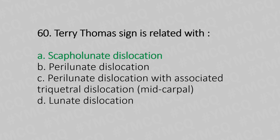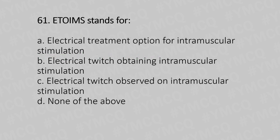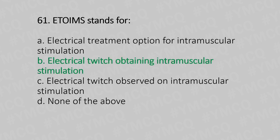Question 61: ETOIMS stands for — Option A: electrical treatment option for intramuscular stimulation, Option B: electrical twitch obtaining intramuscular stimulation, Option C: electrical twitch observed on intramuscular stimulation, Option D: none of the above. The answer is Option B, electrical twitch obtaining intramuscular stimulation.